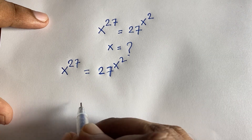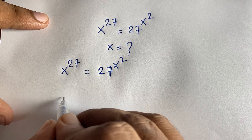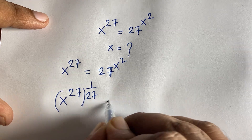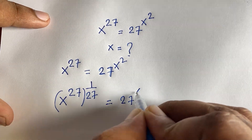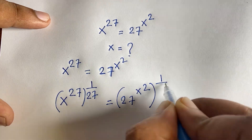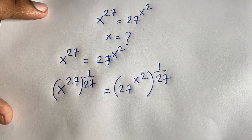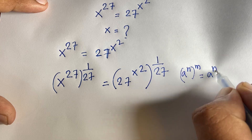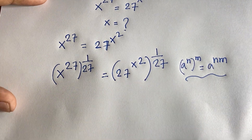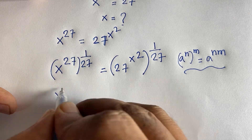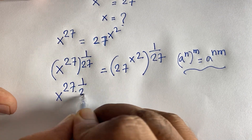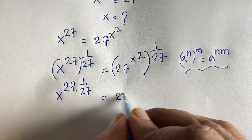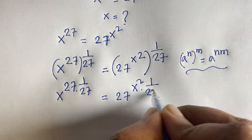I use both side exponent 1 over 27. So I can say x to the power 27, and then raise to the power 1 over 27. I use both side exponent 1 over 27. We know the exponential law: a to the power n, whole to the power m, equals a to the power n times m. According to this law, this equation becomes x to the power 27 times 1 over 27, is equal to 27 to the power x squared times 1 over 27.